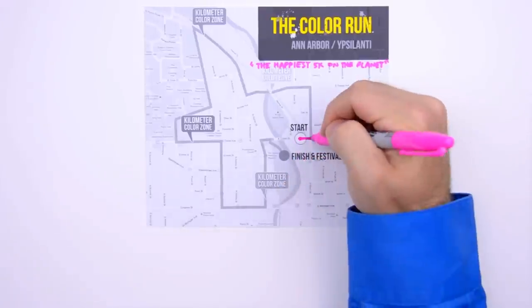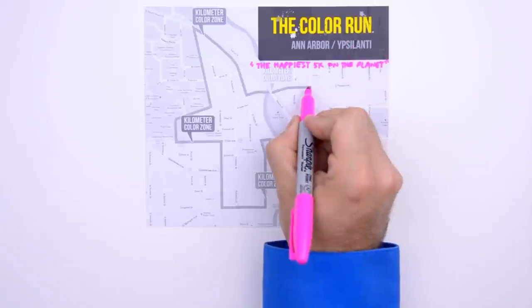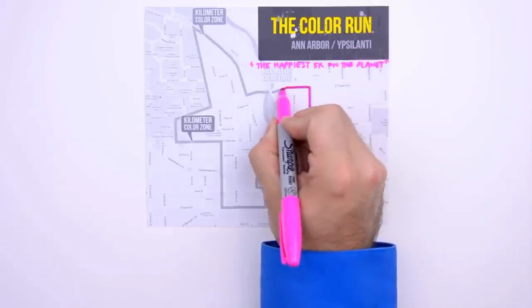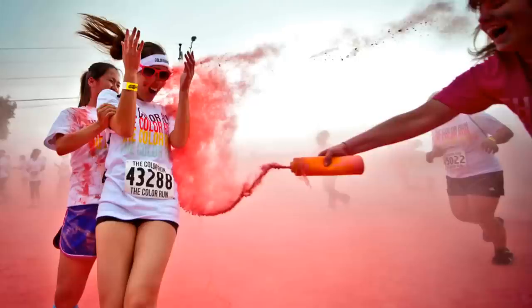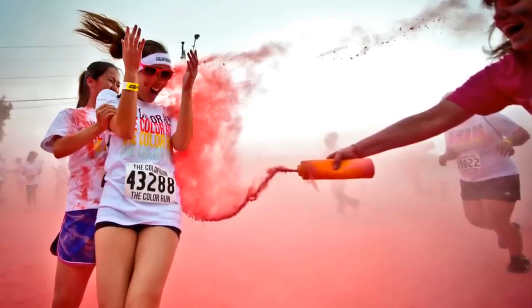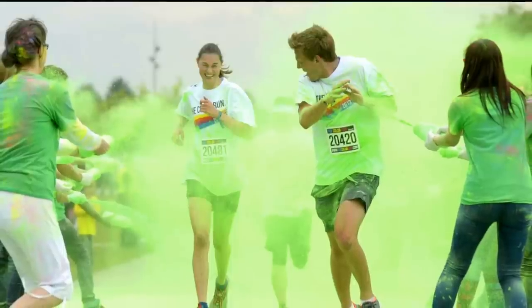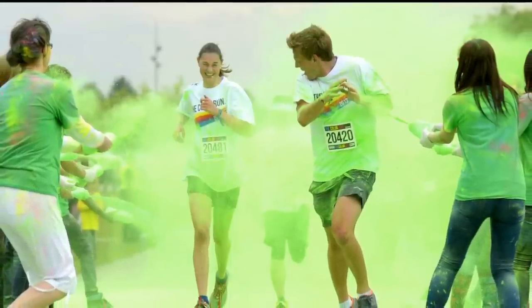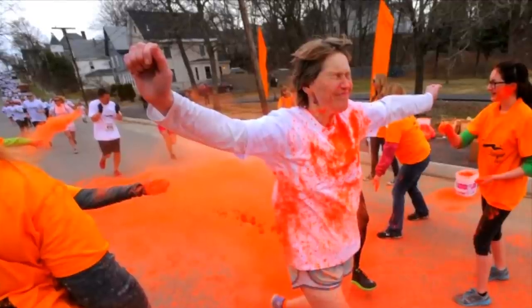First they head east for a block, then north for a few blocks, and then they turn west. At this point, the runners celebrate the completion of their first kilometer by getting doused with colored cornstarch. Typically people dislike getting stuff thrown in their faces, but at the Color Run, it's literally a rite of passage.